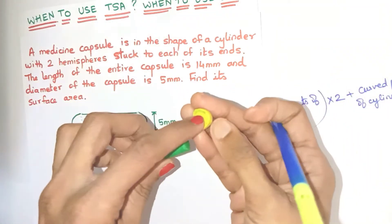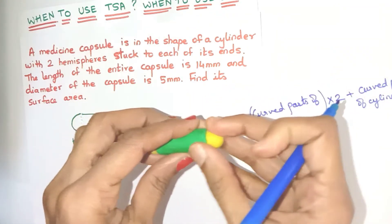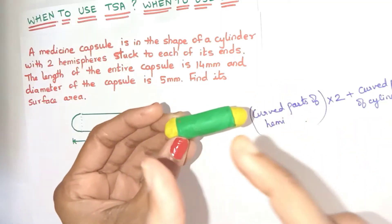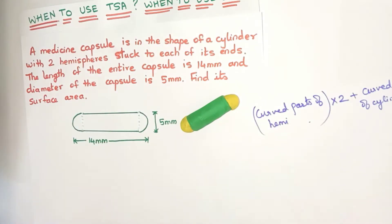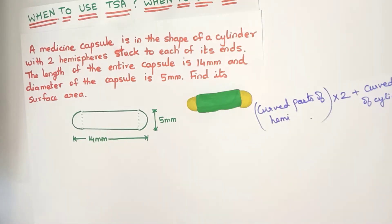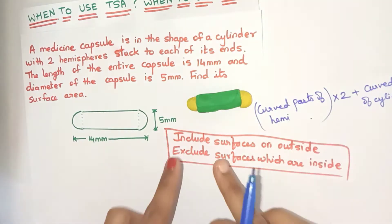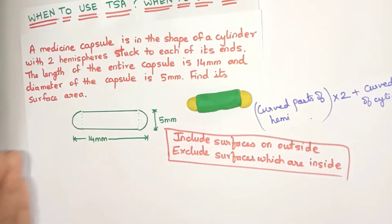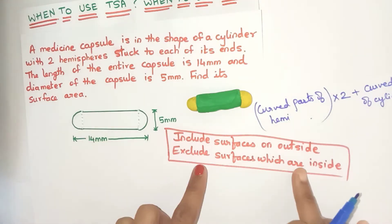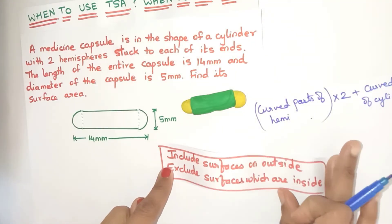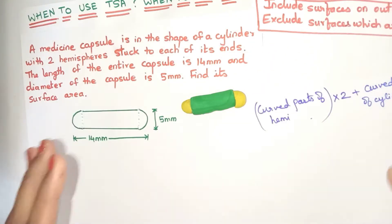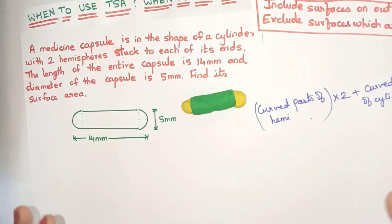What about the flat regions of the hemisphere and the cylinder? They are inside the solid, so they will not be included in the surface area. The main guideline we follow here is: include surfaces which are outside the solid and exclude all surfaces which are inside. Remember this guideline for any question of this type and you will easily solve it.